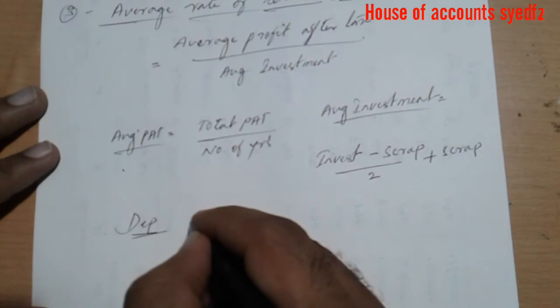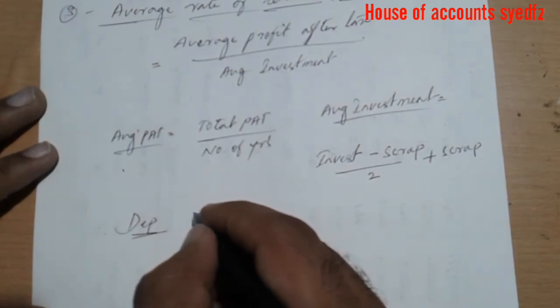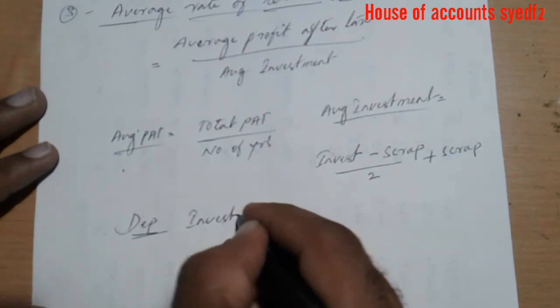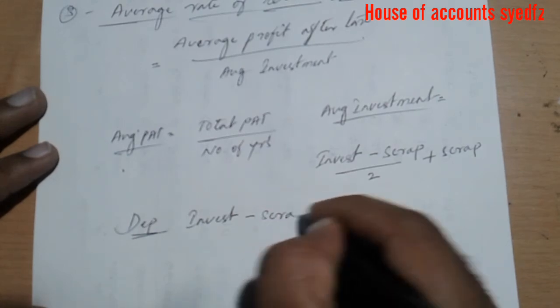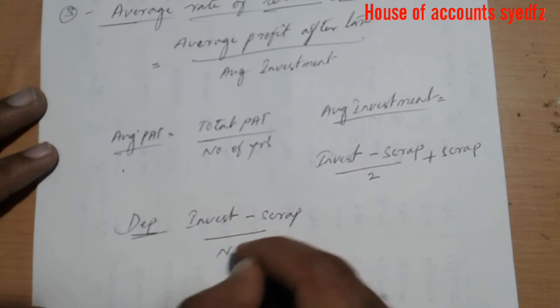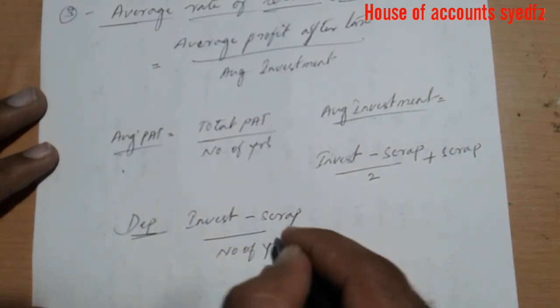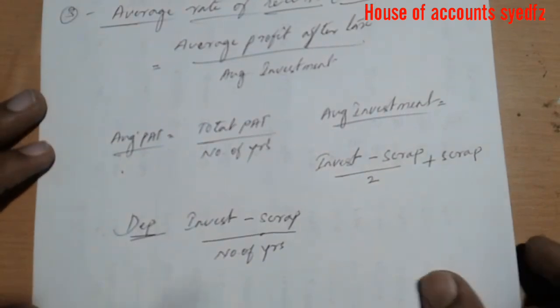The formula for depreciation is: investment minus scrap value divided by number of years. This is how we can calculate average investment and depreciation.